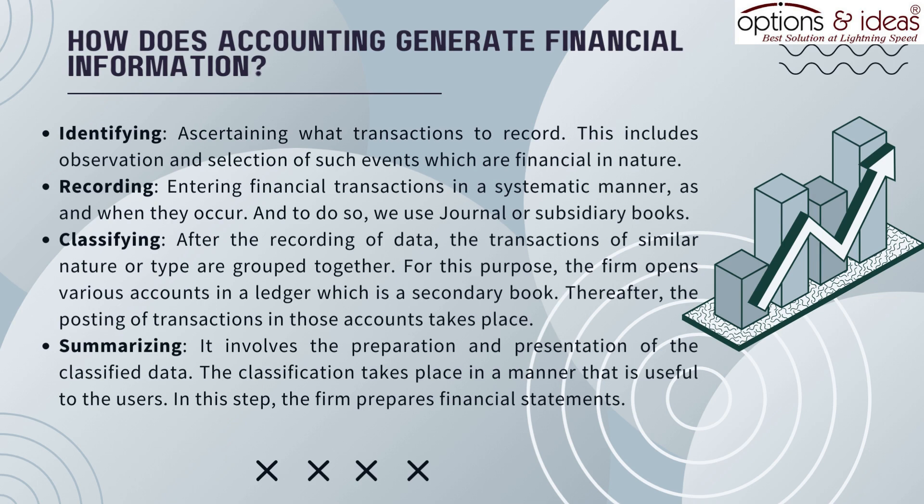Step 3: Classifying — after the recording of data, transactions of similar nature or type are grouped together. For this purpose, the firm opens various accounts in a ledger, which is a secondary book. Thereafter, the posting of transactions in those accounts takes place. Step 4: Summarizing — it involves the preparation and presentation of the classified data in a manner useful to the users.